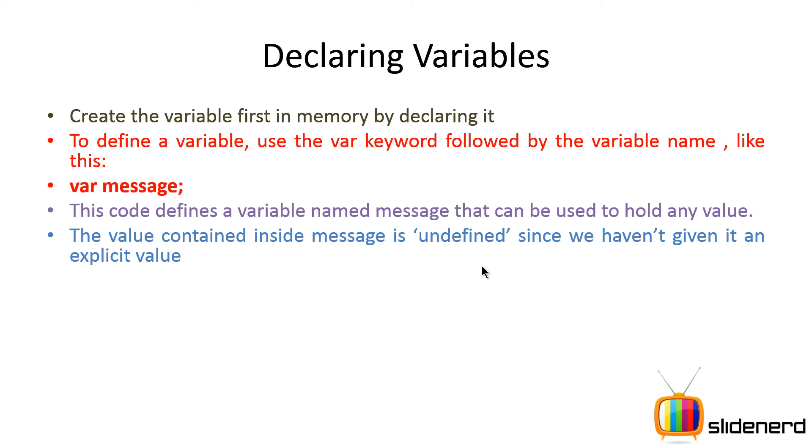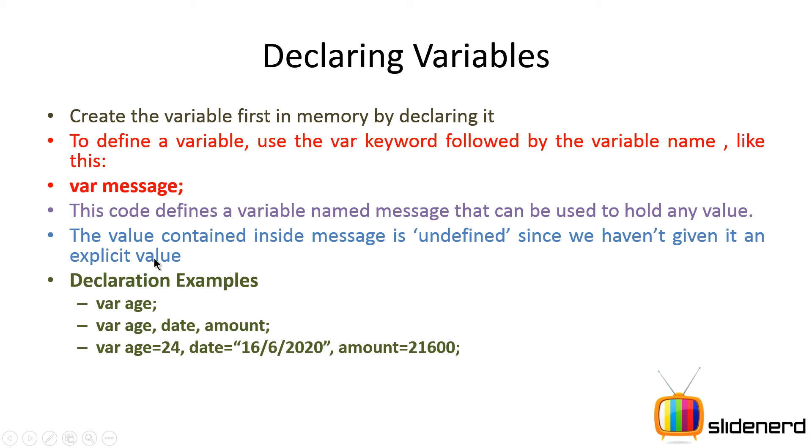These are some examples of how you can tell your JavaScript interpreter to create some values inside RAM. You can say var age - you're telling the interpreter to create a variable named age whose value is undefined since you haven't given anything. The second statement has var age comma date comma amount - three variables being created.